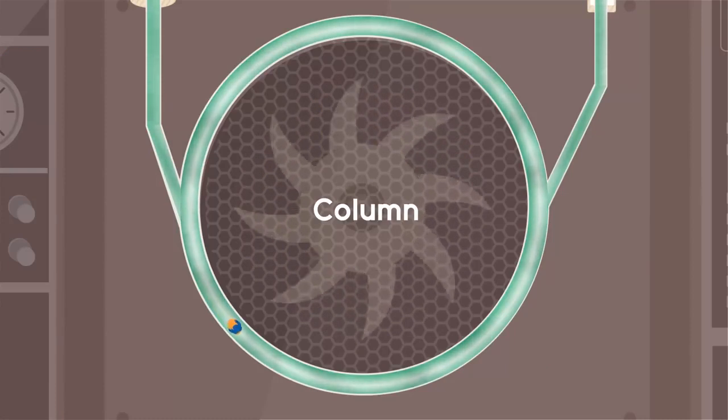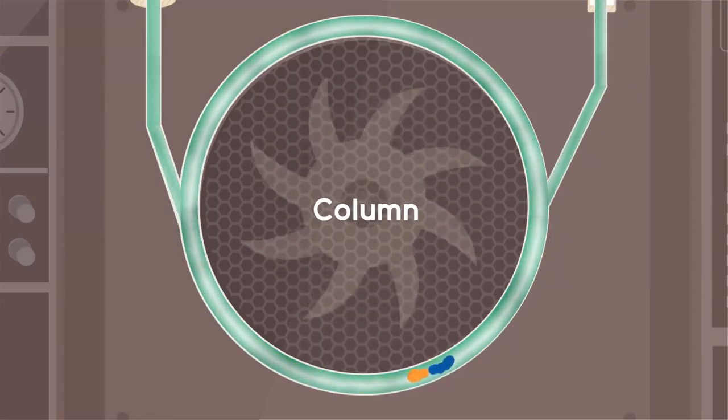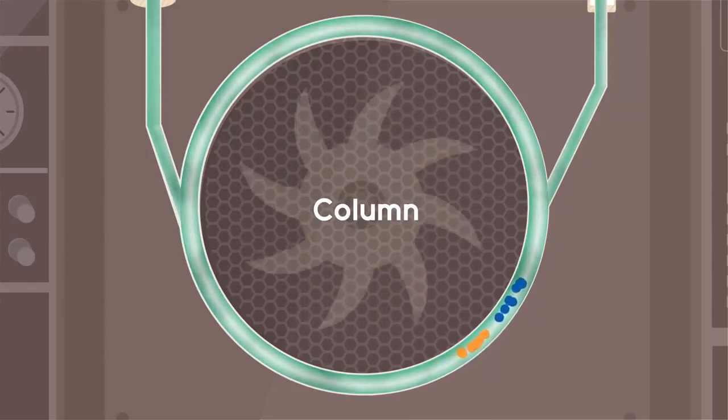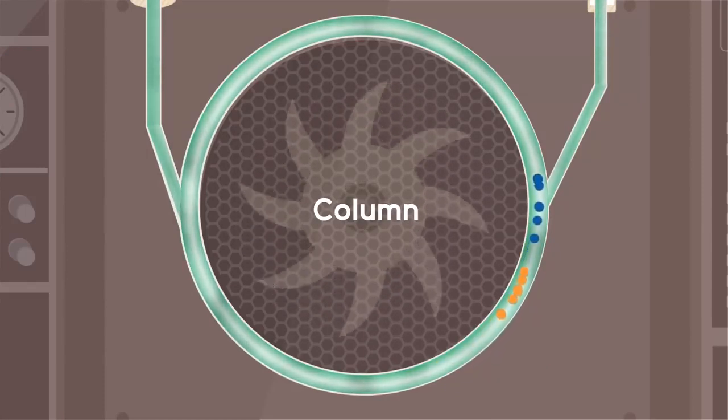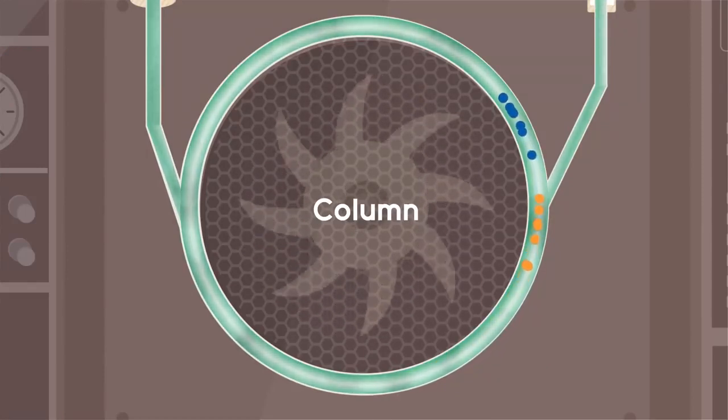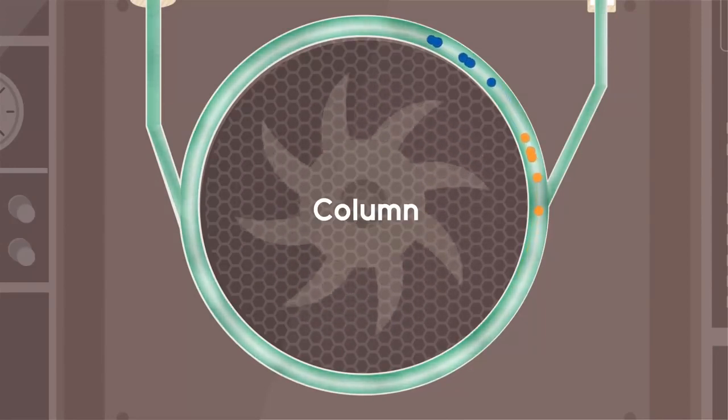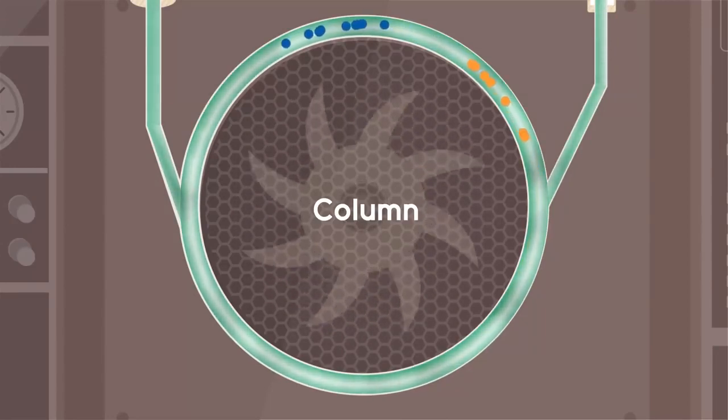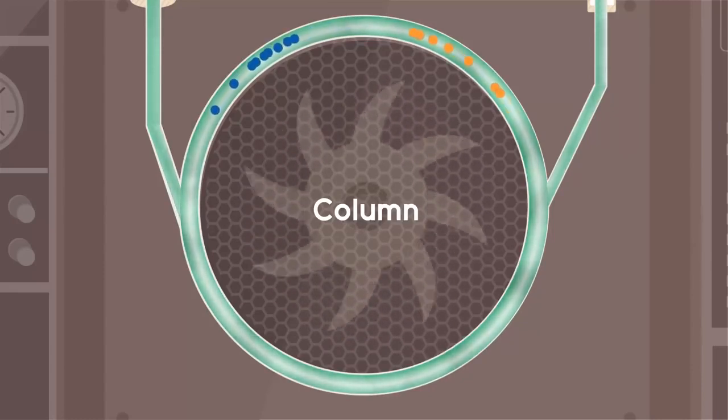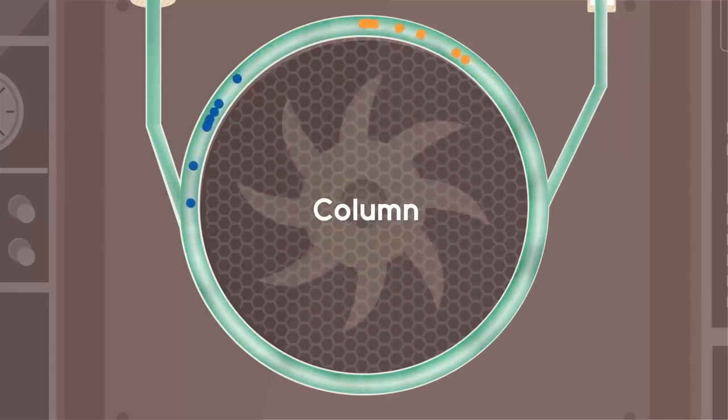The column. When the sample reaches the column, the components interact with the stationary phase in different ways. As we can see, the blue compound is moving faster than the yellow compound, which means it is less retained on the stationary phase.